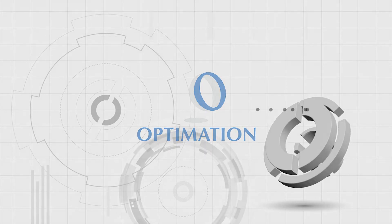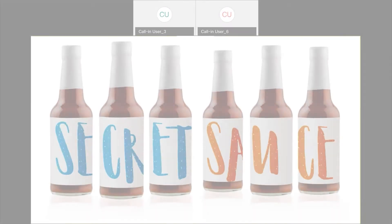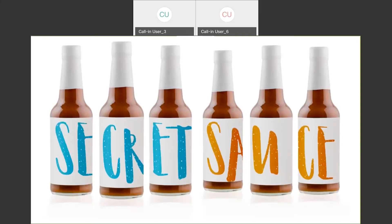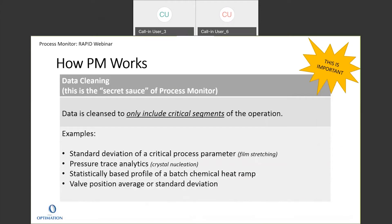Take notice of this — this is really what you think is key about Process Monitor to help you evaluate the data more effectively. The basic key thing is to evaluate the critical segments of the operation. I talked about a couple here and then we'll go into some more specific examples.